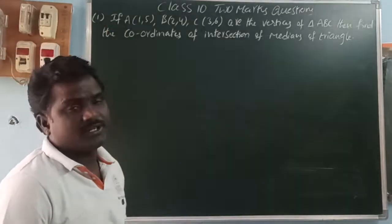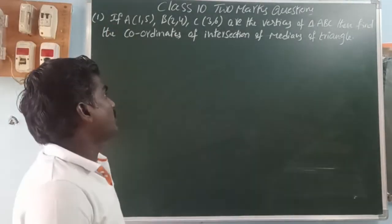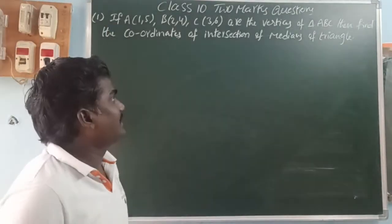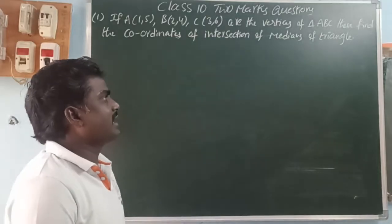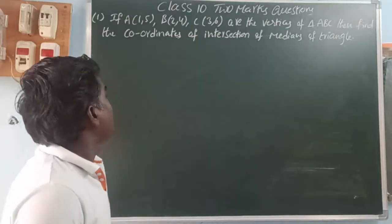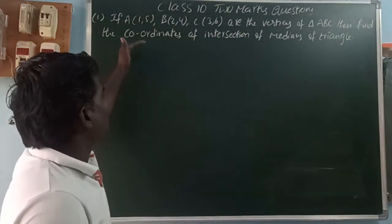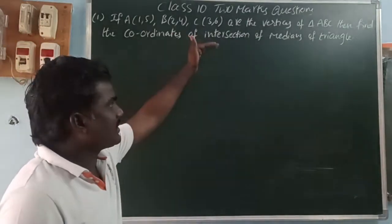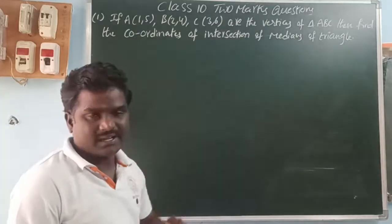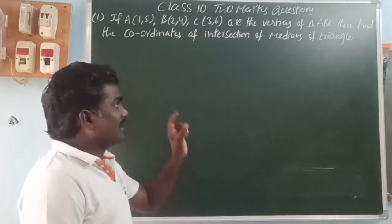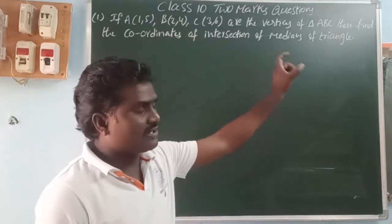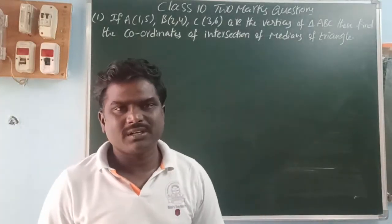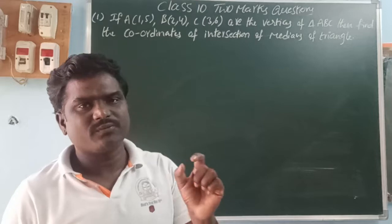If A(1,5), B(2,4), C(3,6) are the vertices of triangle ABC, then find the coordinates of the intersection of medians of the triangle. The intersection of medians of a triangle is nothing but the centroid of the triangle.